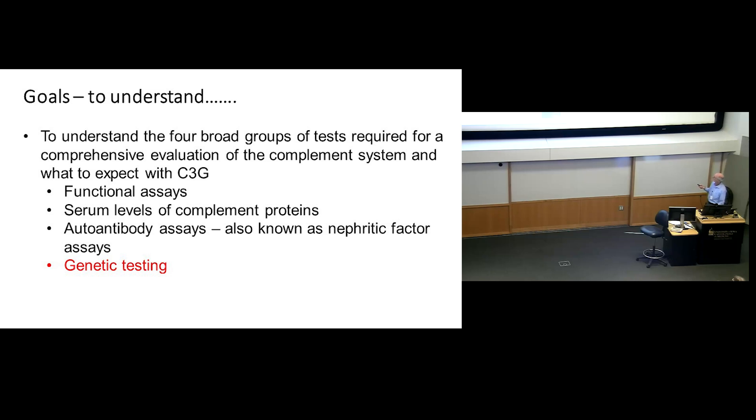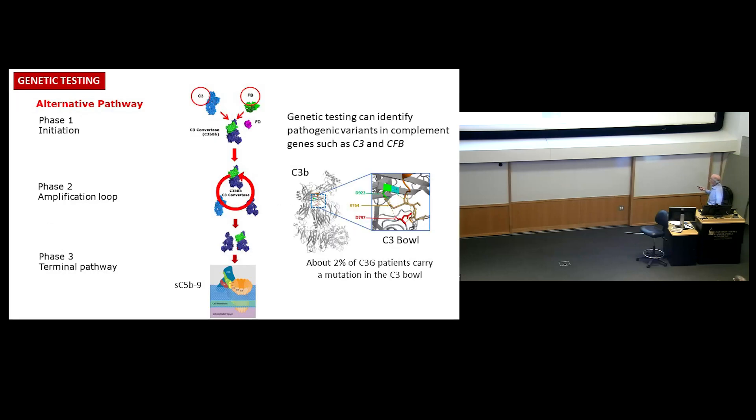We also do genetic testing. The genetic testing can identify variants in these genes that impact complement regulation. We look at C3, factor B, and factor H. Through work done in the lab as part of the USO's team, we found that about 2% of people with C3G carry a mutation in what we call the bowl region of C3. That changes the sensitivity of C3 convertase to the regulatory proteins that are supposed to control it, so if they don't control it properly, then C3 convertase is too active.